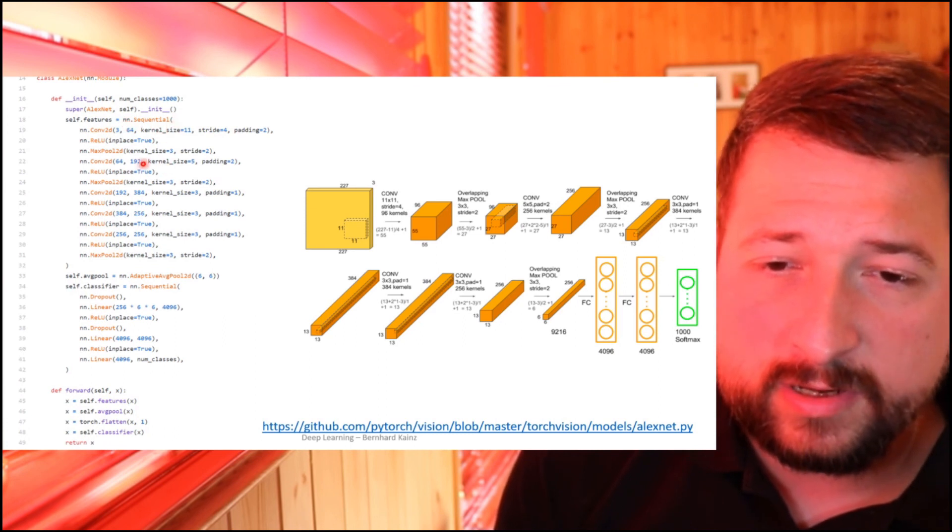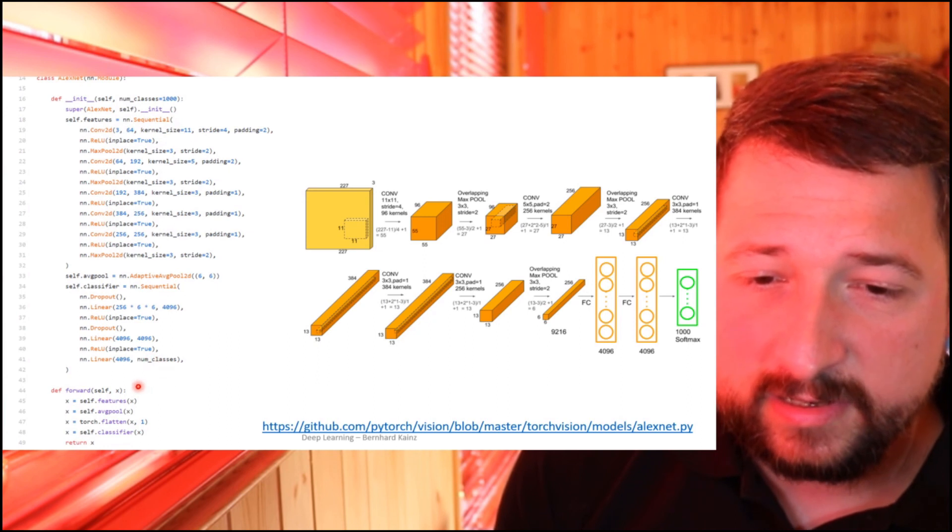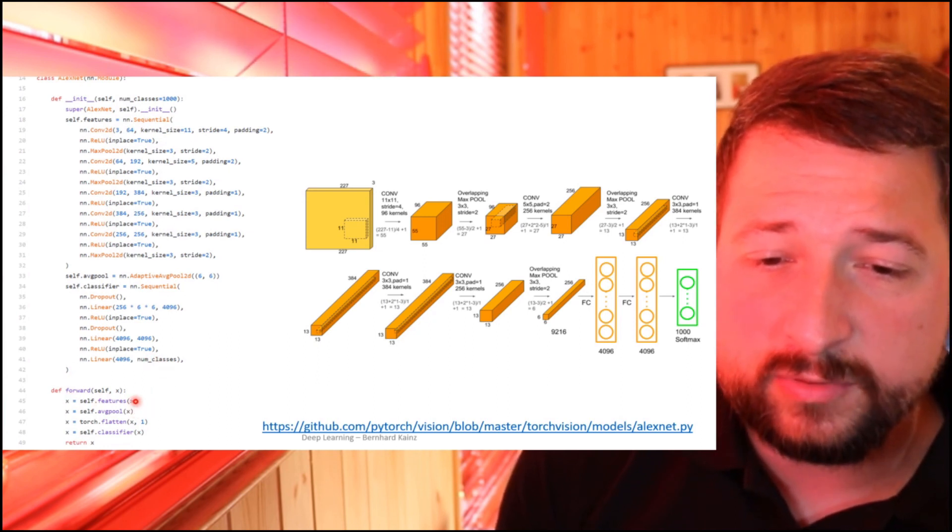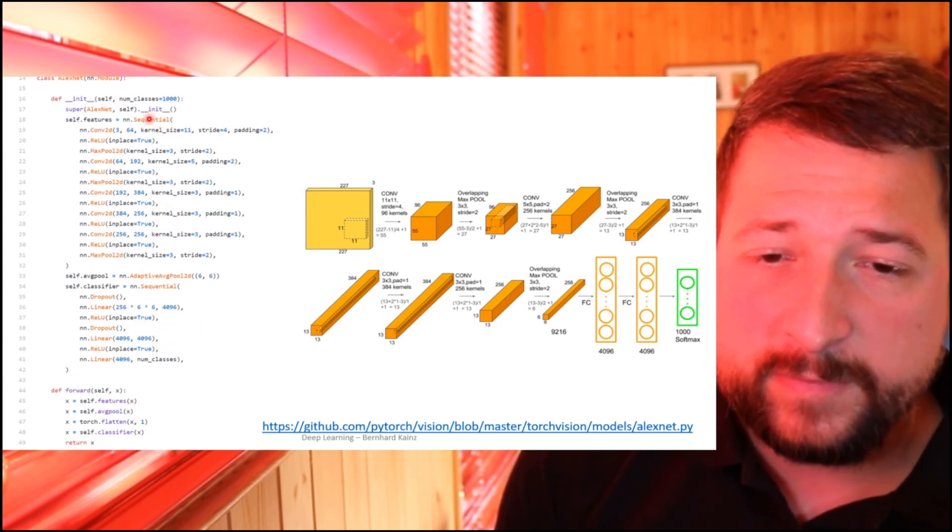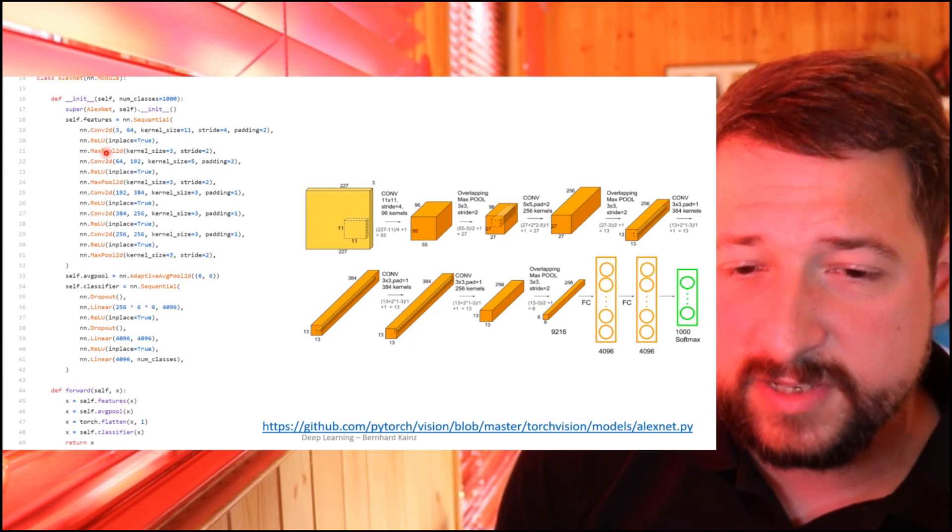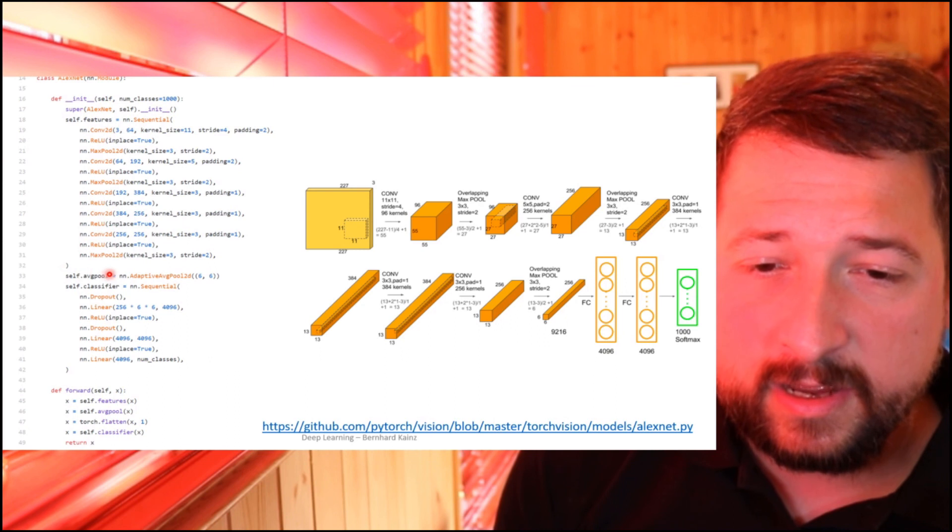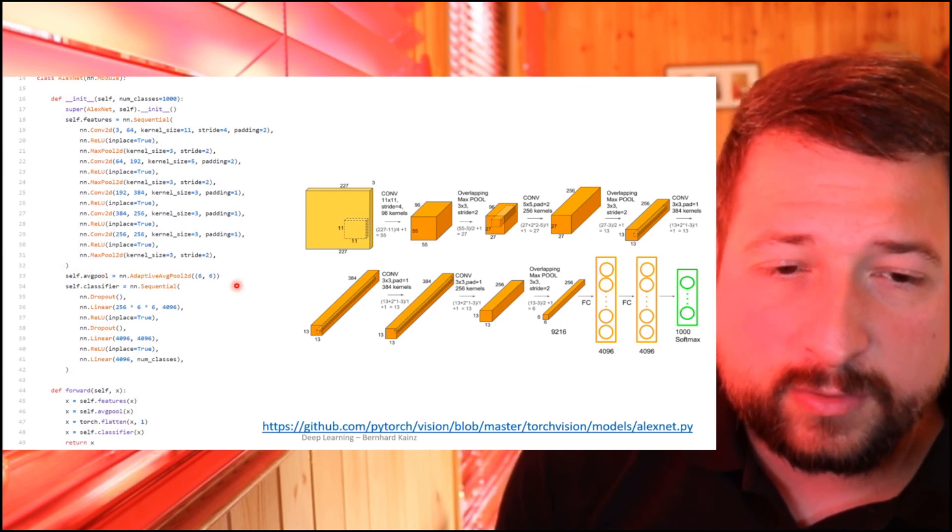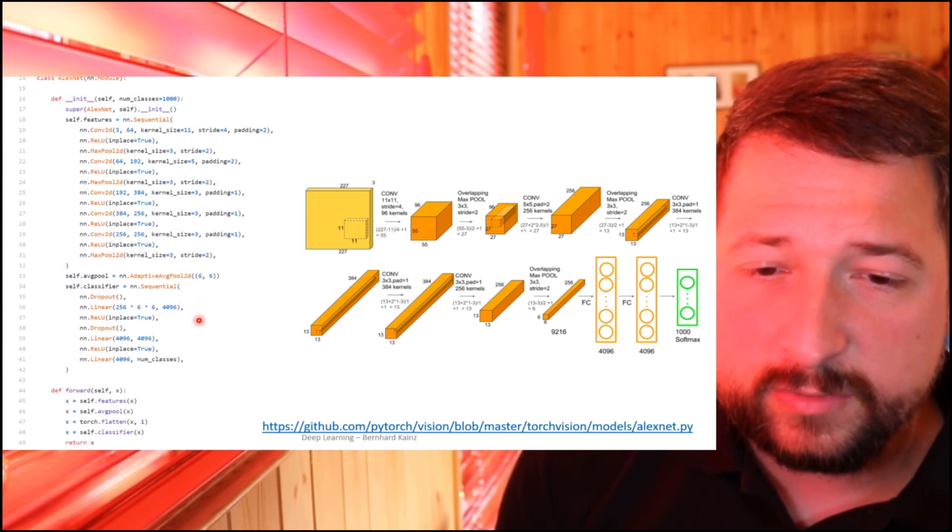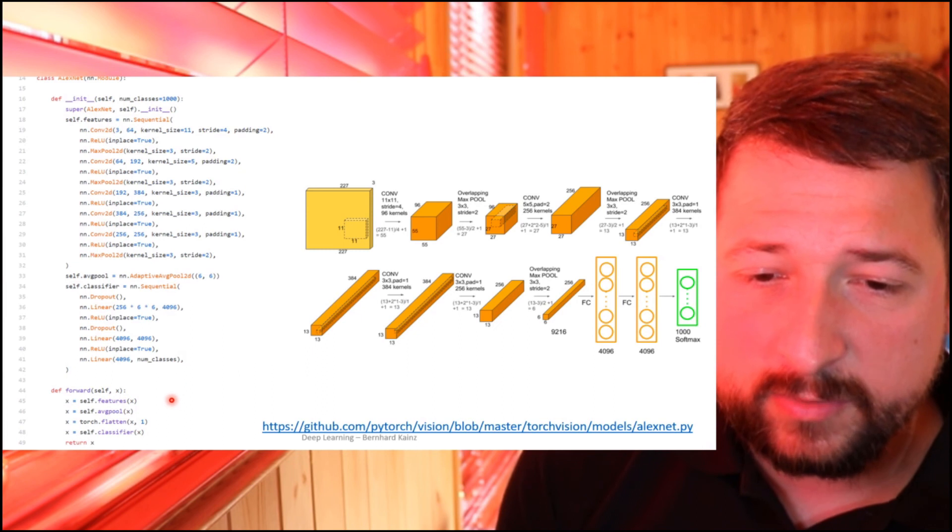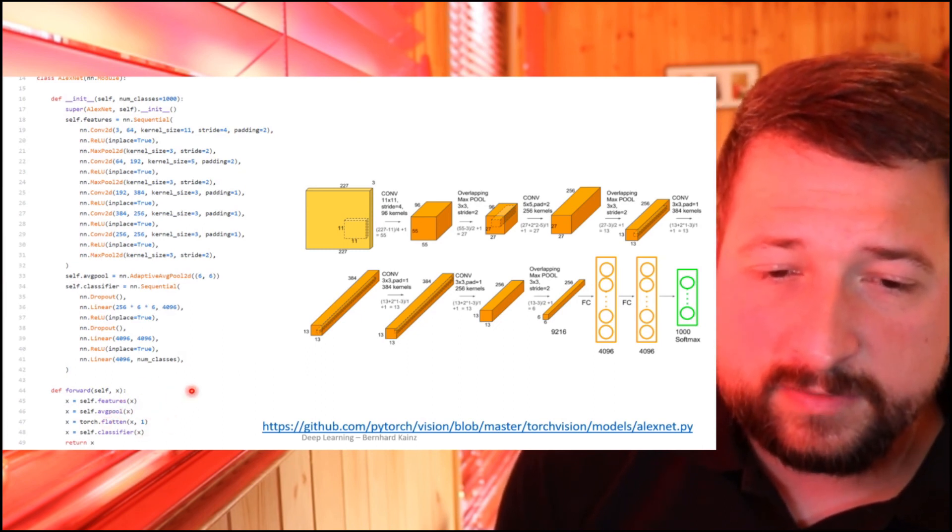We can use this directly in the forward paths and pass the input through the entire network at once, or like here, through the two parts of the network. Because here I have kind of separated the 2D feature extractor. Then I do an average pooling across these to make them fit here into the linear units, also activated by ReLUs. But this kind of shortens your forward path a little bit, which is nice.